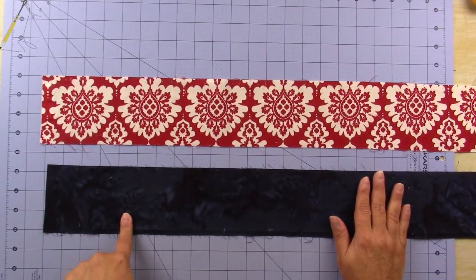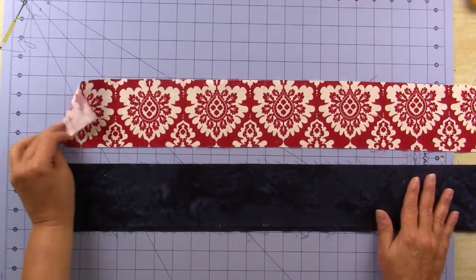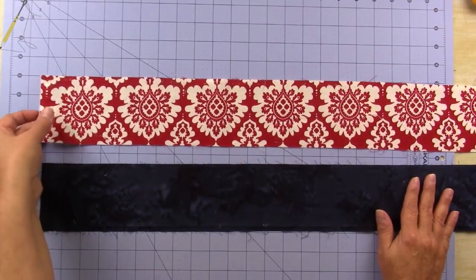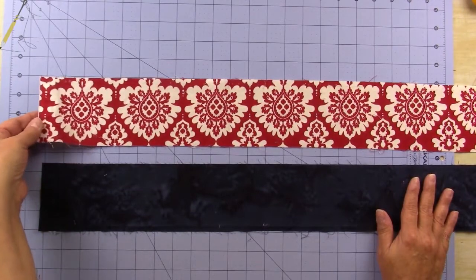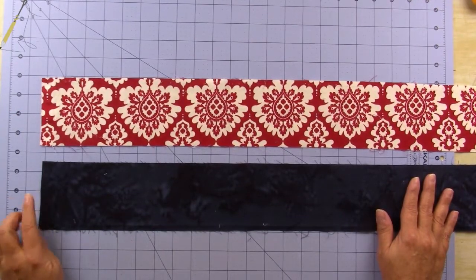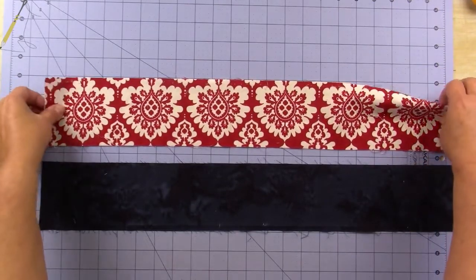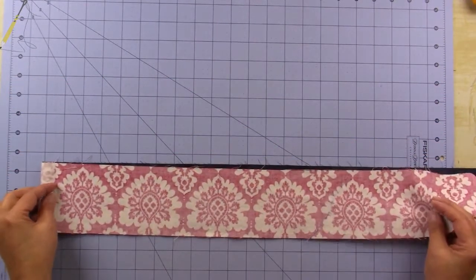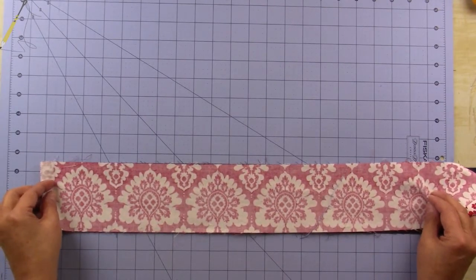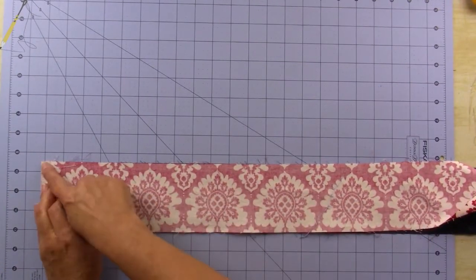When you strip piece, I like to take the selvage—this has a big selvage on both sides, this red, and the blue has a small selvage, it's a batik—and I like to line up the selvages. So you're going to place them right sides together and we're going to stitch on one side. We're going to start here and stitch all the way to the other side.